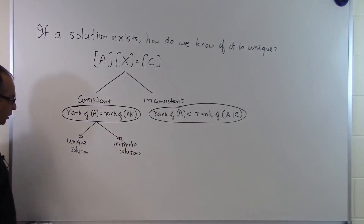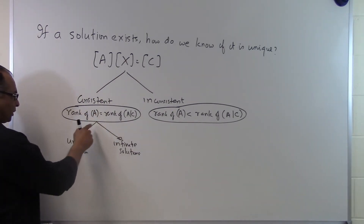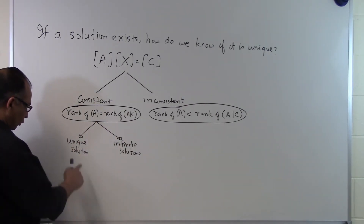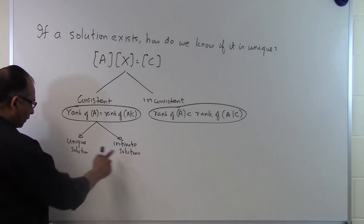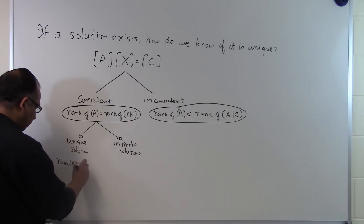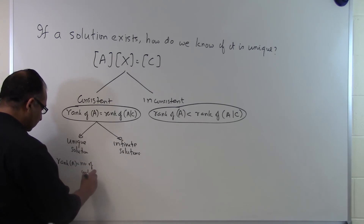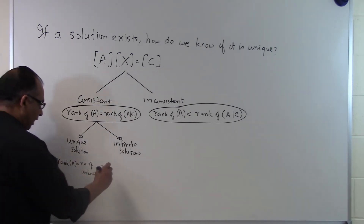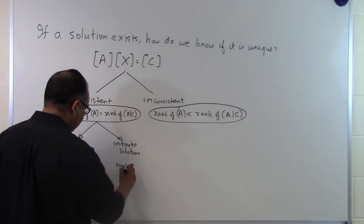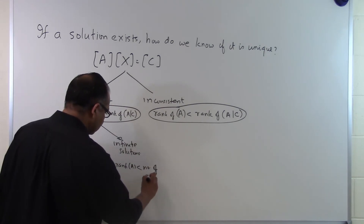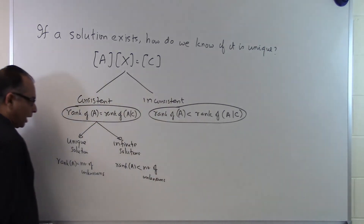The question arises: how do we make a distinction, once we have established that a particular system of equations is consistent — that the rank of the coefficient matrix is the same as the rank of the augmented matrix — whether we are going to have a unique solution or infinite solutions? For that, all we have to do is check if the rank of A is equal to the number of unknowns. If the rank of the coefficient matrix equals the number of unknowns, it has a unique solution. If the rank of A is less than the number of unknowns, we have an infinite number of solutions.